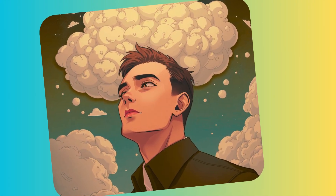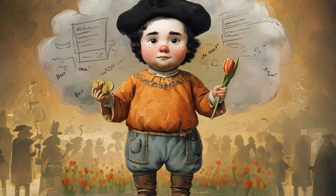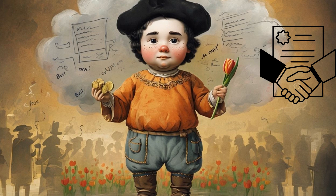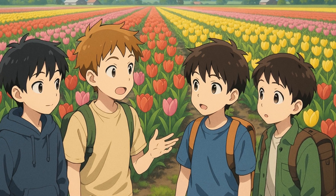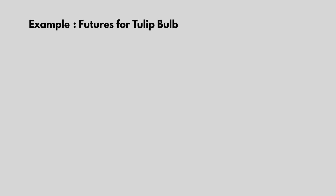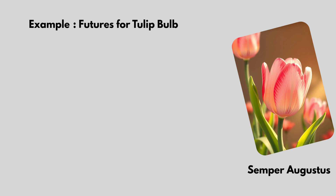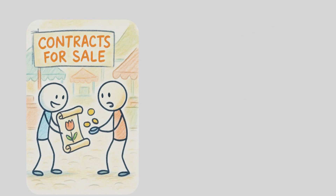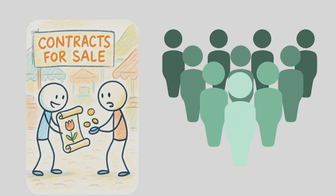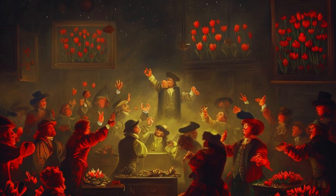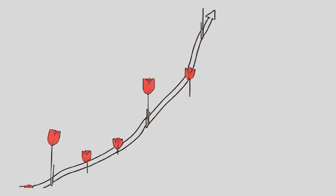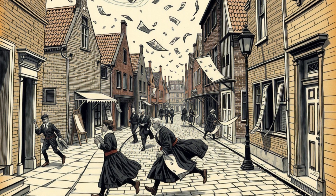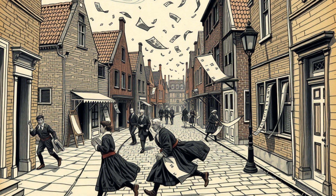So traders invented a clever solution: forward contracts — an agreement to buy or sell tulip bulbs at a future date for a fixed price. For example, you agree today to buy a rare Semper Augustus tulip bulb in three months for 1,000 guilders. You don't pay today and don't receive the bulb today — you're simply locking in the price. You could sell that contract to someone else before it matures, creating a secondary market, just like modern futures trading. As demand grew, people started buying and selling these contracts not because they wanted tulips, but because they thought the price would keep going up. No one touched a tulip — they were trading paper promises, hoping to flip them for profit. That's why it was called 'wind trade' — trading in thin air.